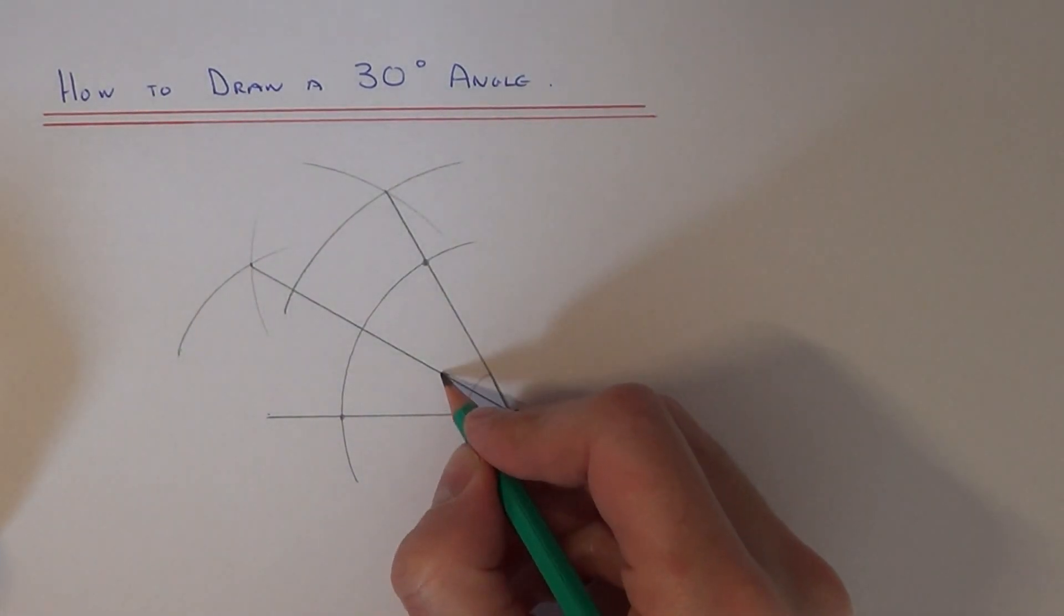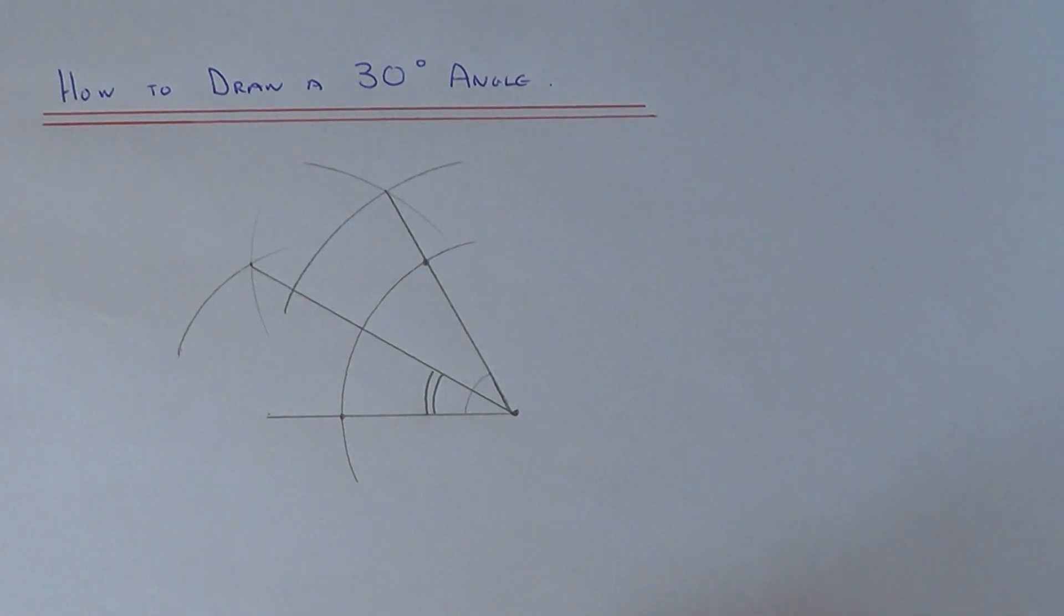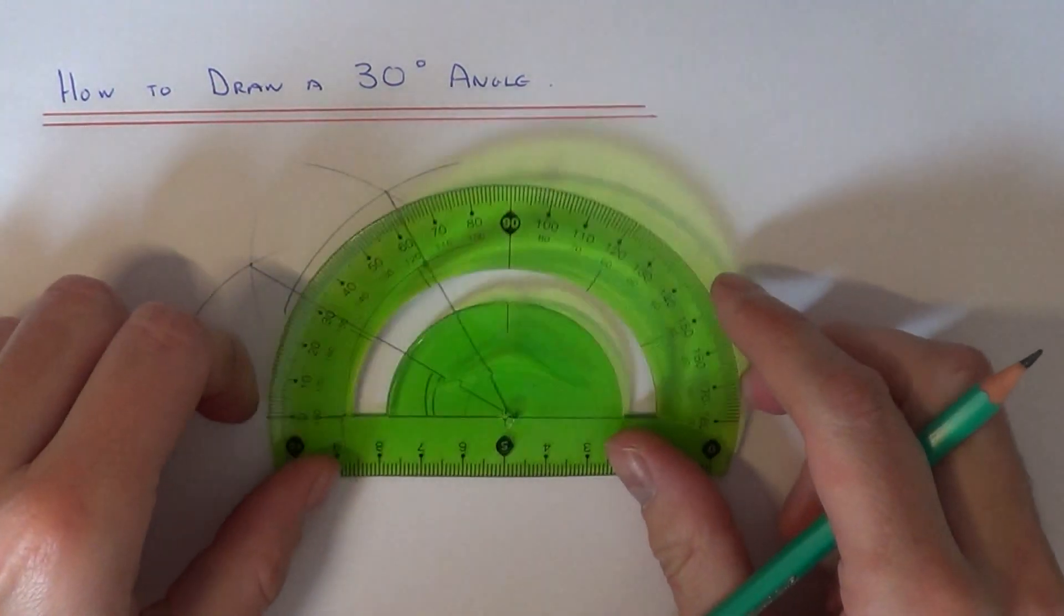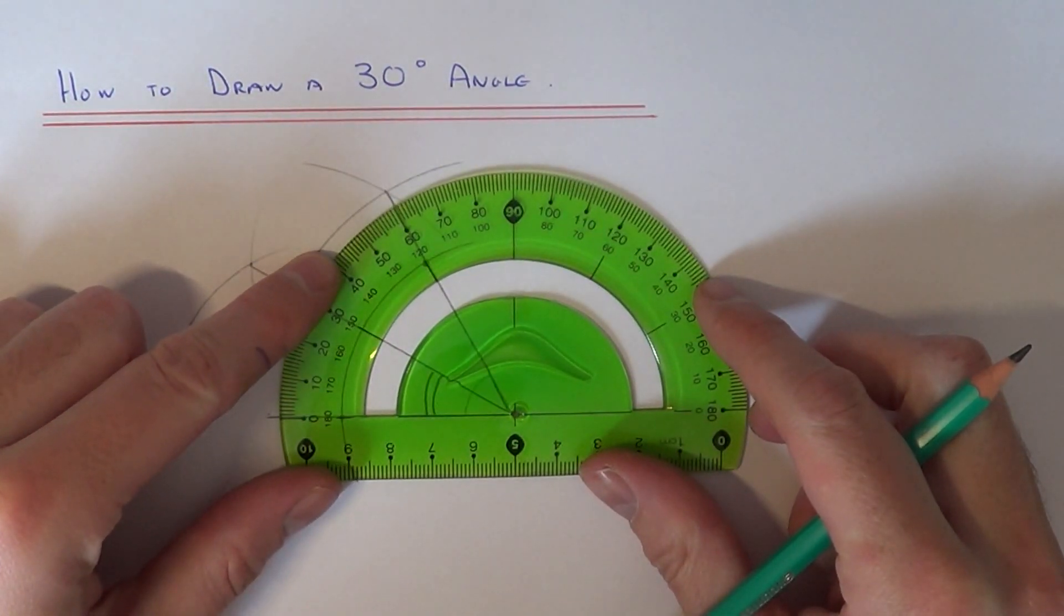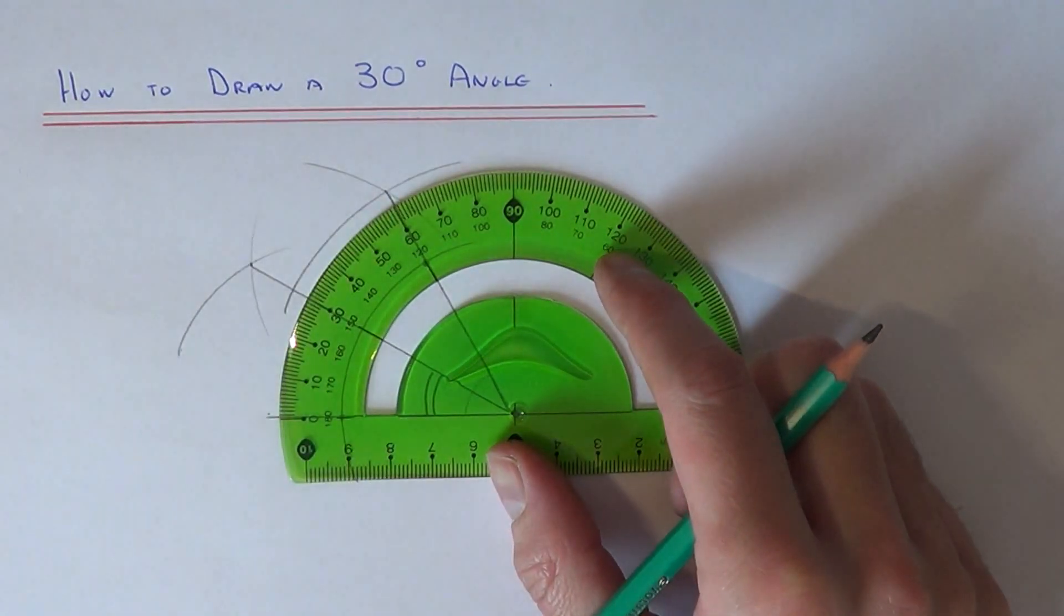And we should now have our 30 degree angle, so this will be 30 degrees. So let's just check this using our protractor. There you go, so it's 30 degrees spot on.